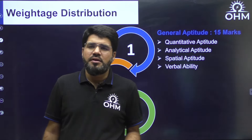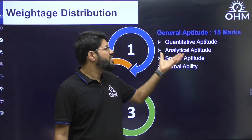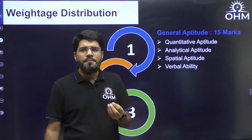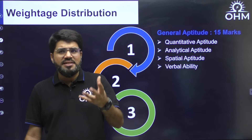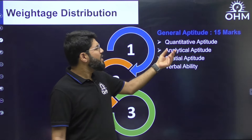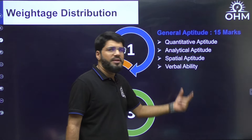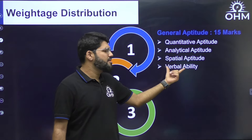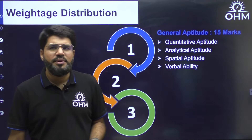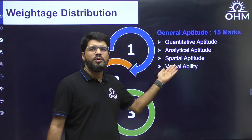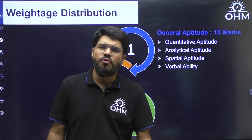General Aptitude has four parts: quantitative aptitude, analytical aptitude, spatial aptitude, and verbal ability. Verbal ability is basically English. In recent years, the weightage of verbal ability has been going down — it used to average around five marks but is now just three to four marks. In GATE 2024, it was only three marks: a one-mark vocabulary question and a two-mark passage-based question, which was quite logical and didn't require heavy grammar.